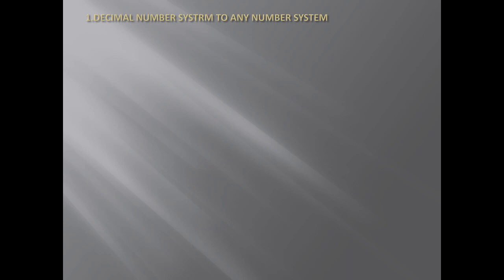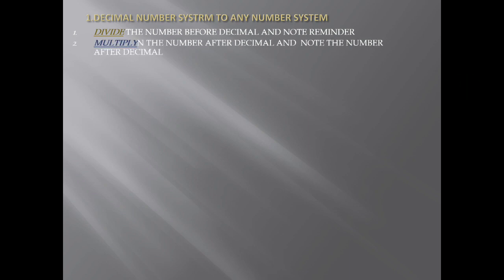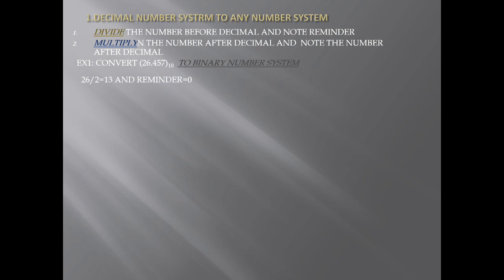We will discuss about the first one, which is decimal number system to any number system — specifically decimal to binary. First, divide the number before the decimal point and note the remainder. Second, multiply the number after the decimal point and note the digit before the decimal. For example, convert 26.457 from base 10 to binary. The number before the decimal is 26.